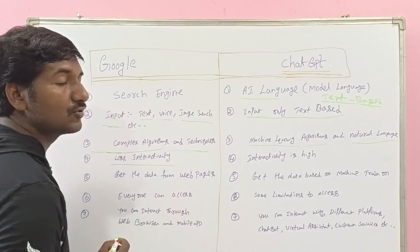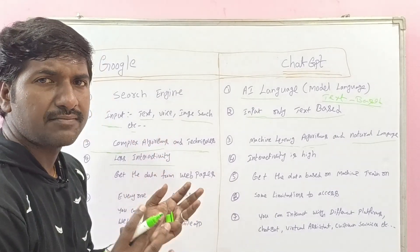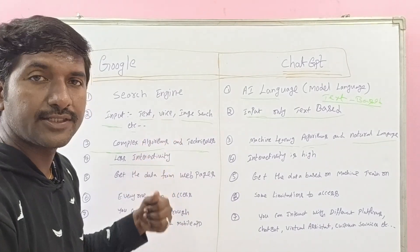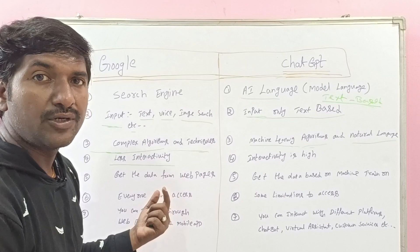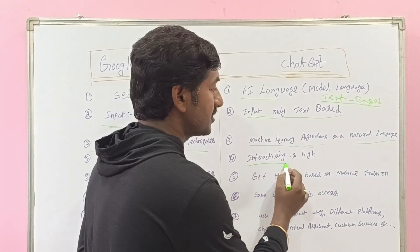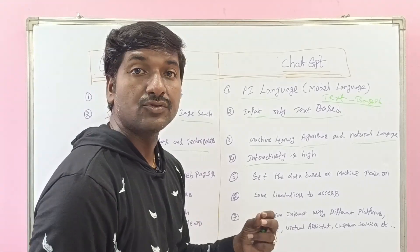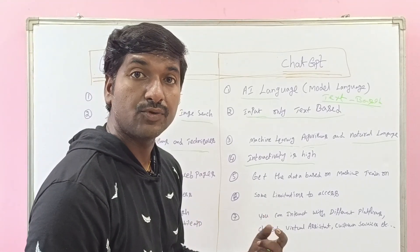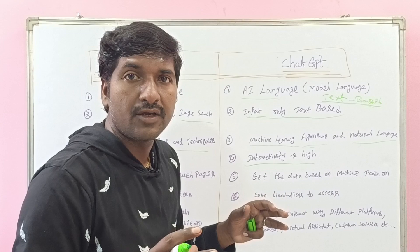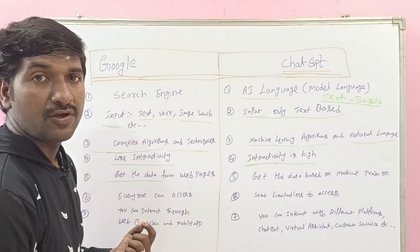The next main difference is interactivity. With the Google search engine, there is less interactivity — you can ask your query through text or voice assistant, but that's about it. Whereas with ChatGPT, your interaction is very high. It feels like you are having a conversation with another person, and ChatGPT gives quick responses in simple, easy-to-understand language.